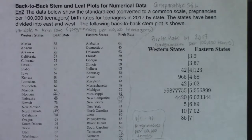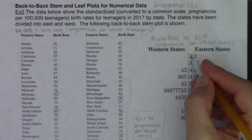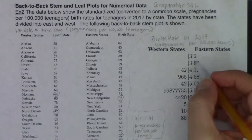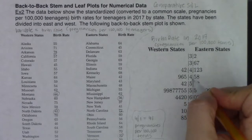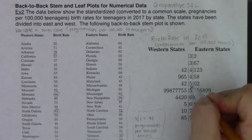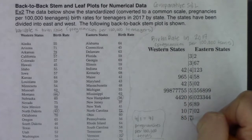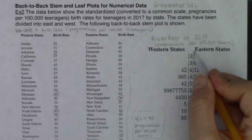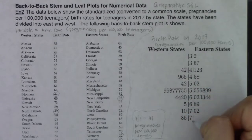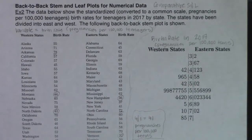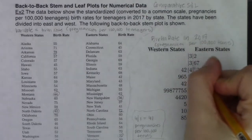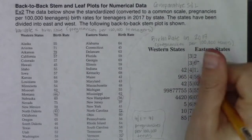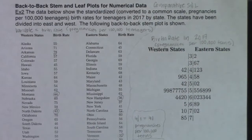Another thing to take note of: if you look at these stems, you can see there are two 3s, two 4s, two 5s, two 6s, and two 7s. They are invoking the low-high method — that's what we're using here. We didn't write L and H, but it's implied.